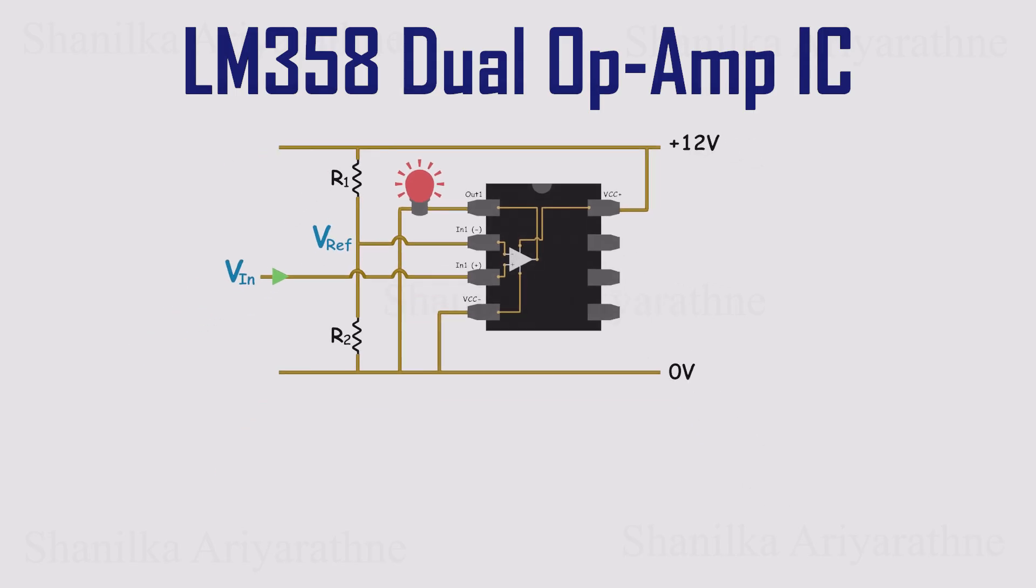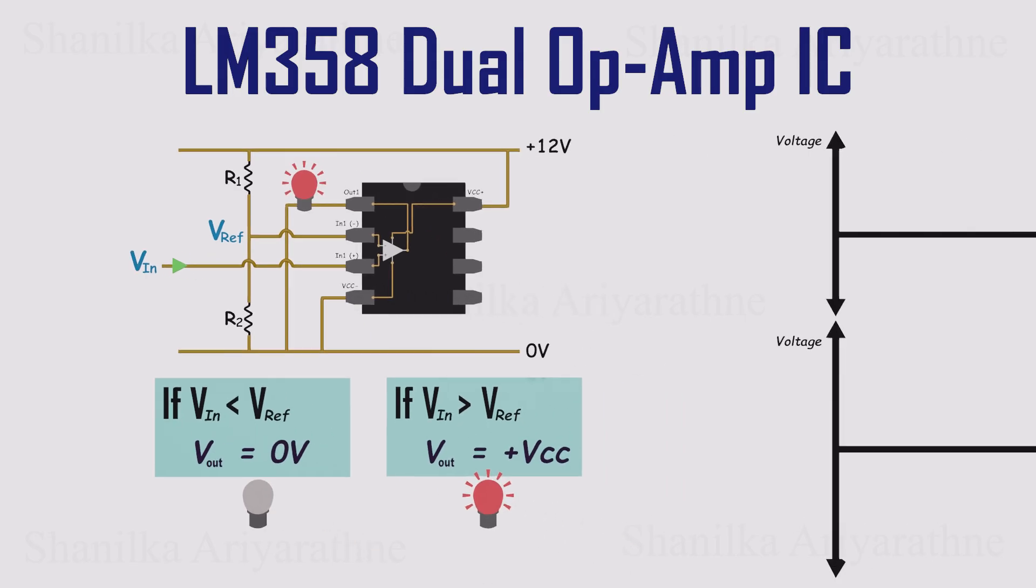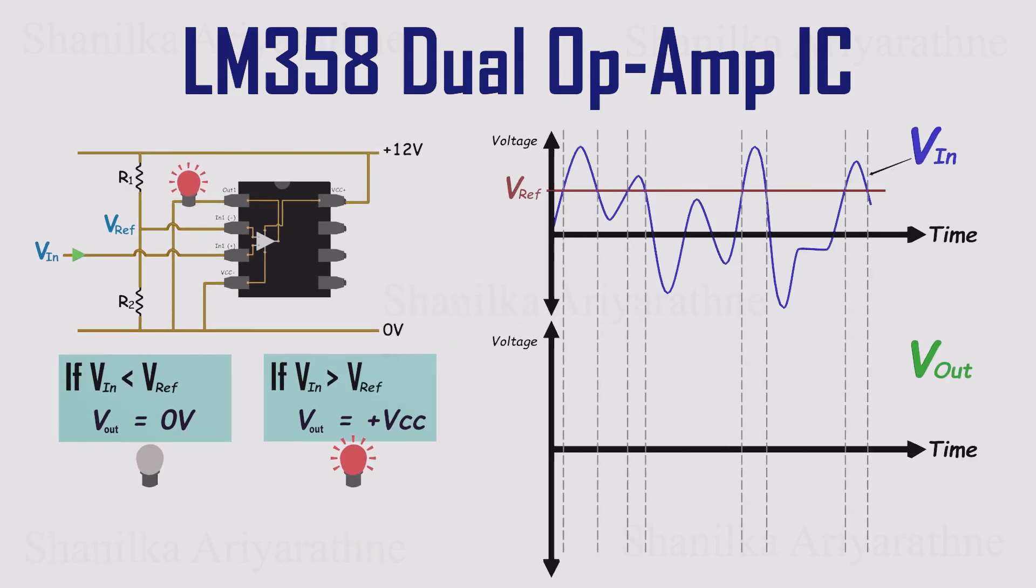Here's how it behaves. If VIN is lower than the reference, the output is 0 volts and the light stays off. If VIN rises above the reference, the output jumps up to VCC, and the light turns on. If we plot both inputs and the output, you'll see that whenever VIN, the non-inverting input, goes above the reference voltage, the output shoots high, but not quite to the full supply voltage. In the LM358, it stops about 1.2 volts below the positive rail. When VIN drops back below the reference, the output falls to 0 volts again.